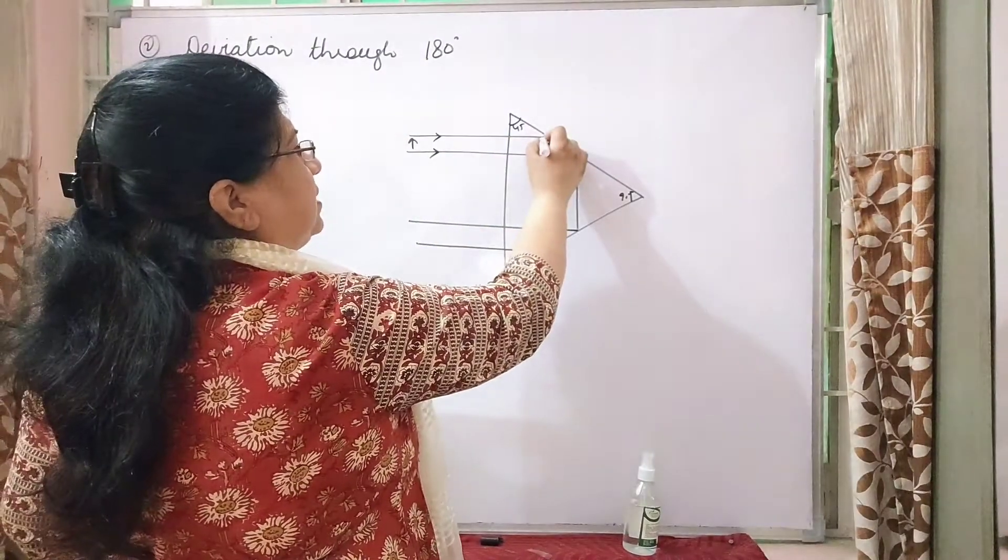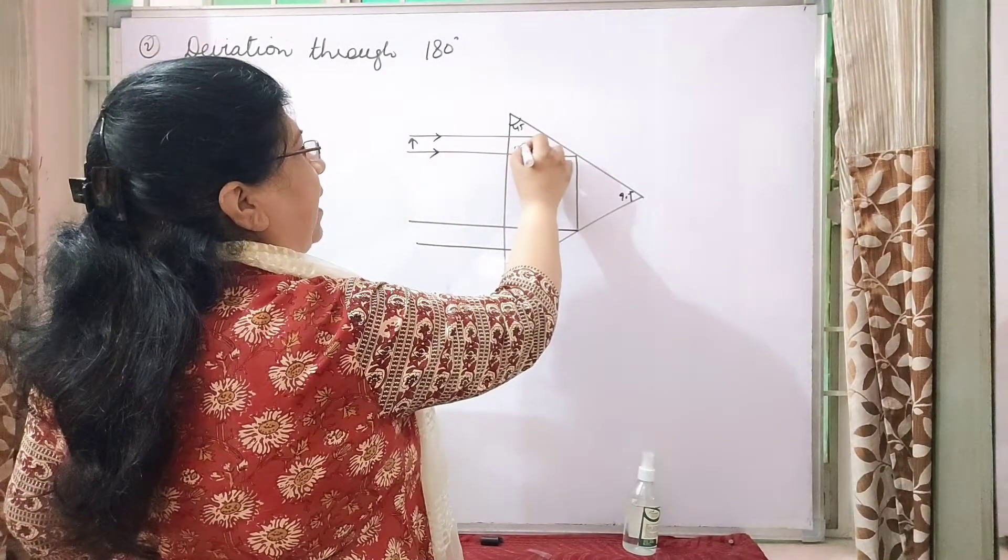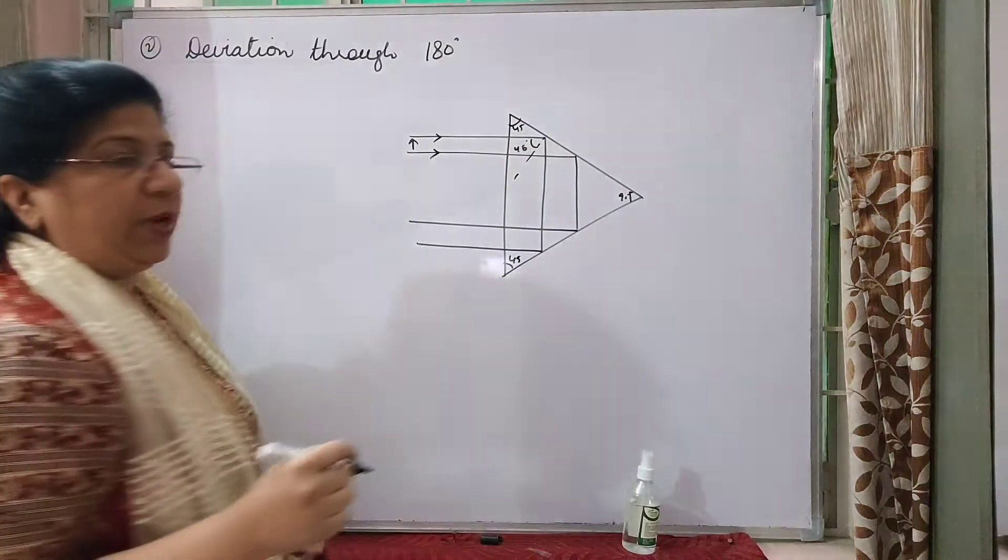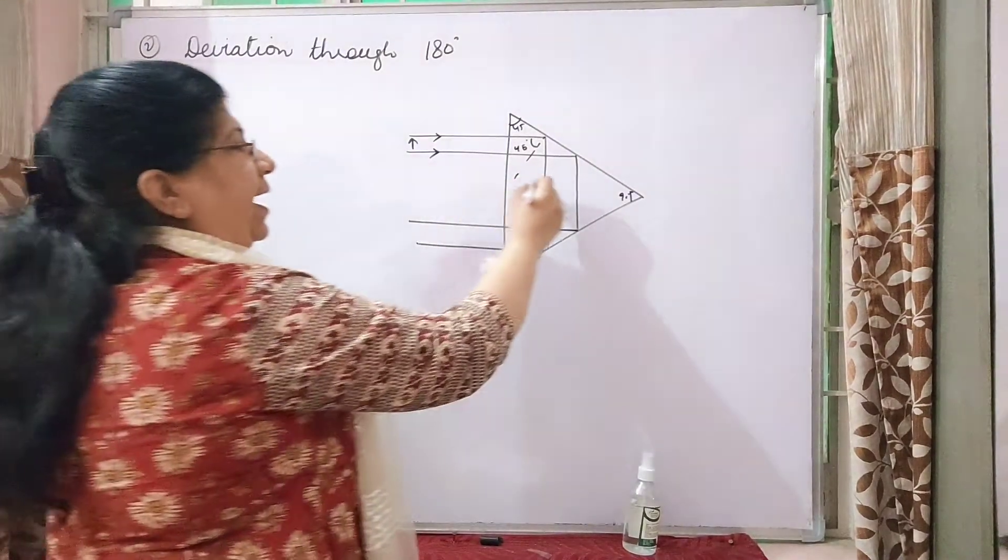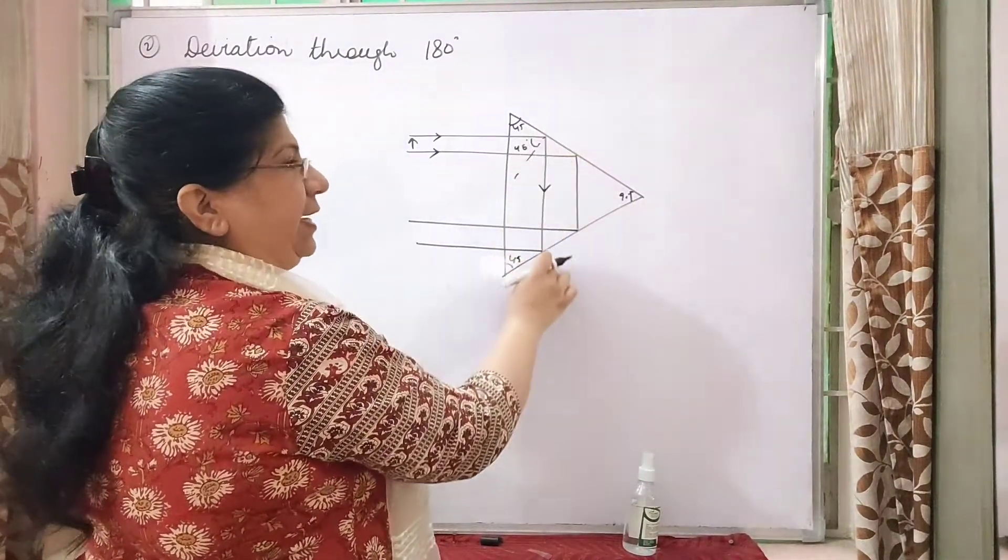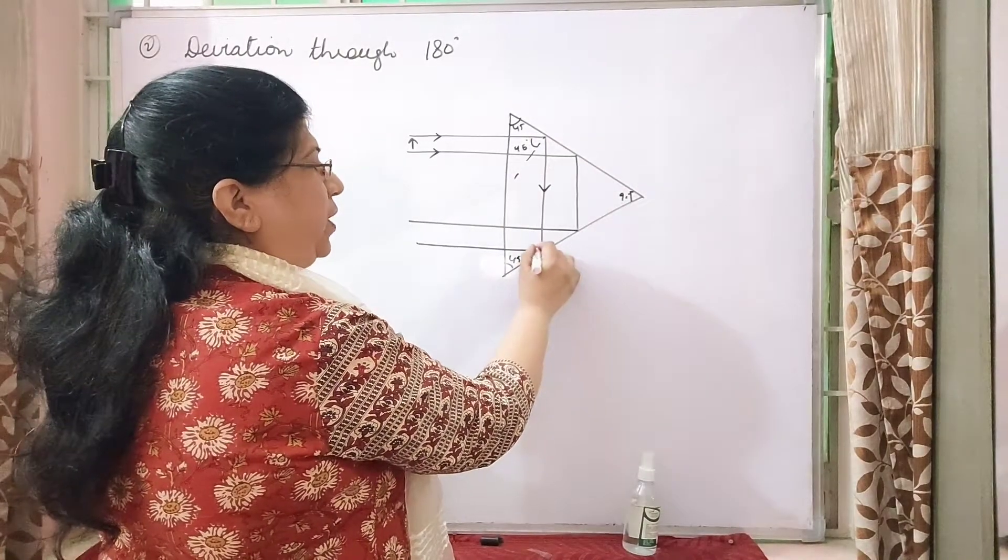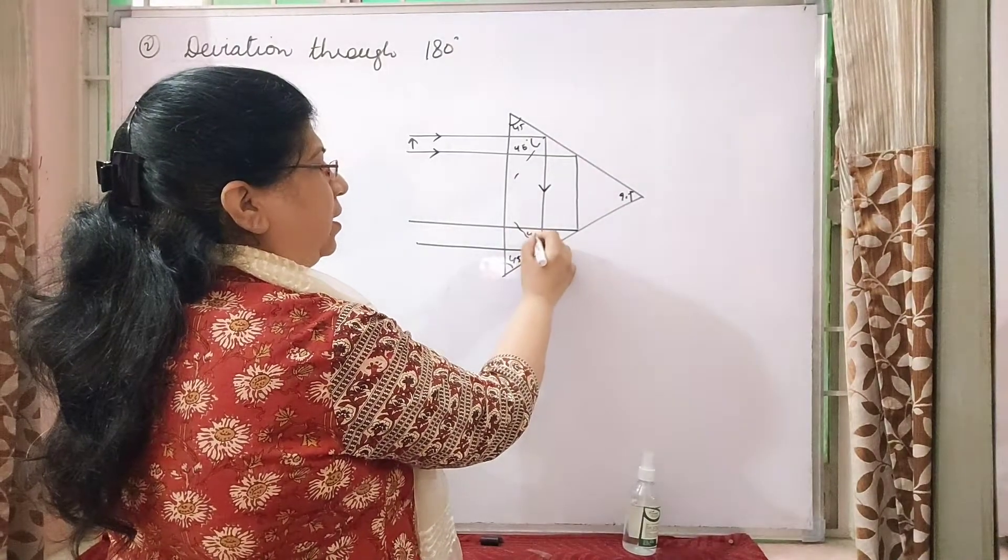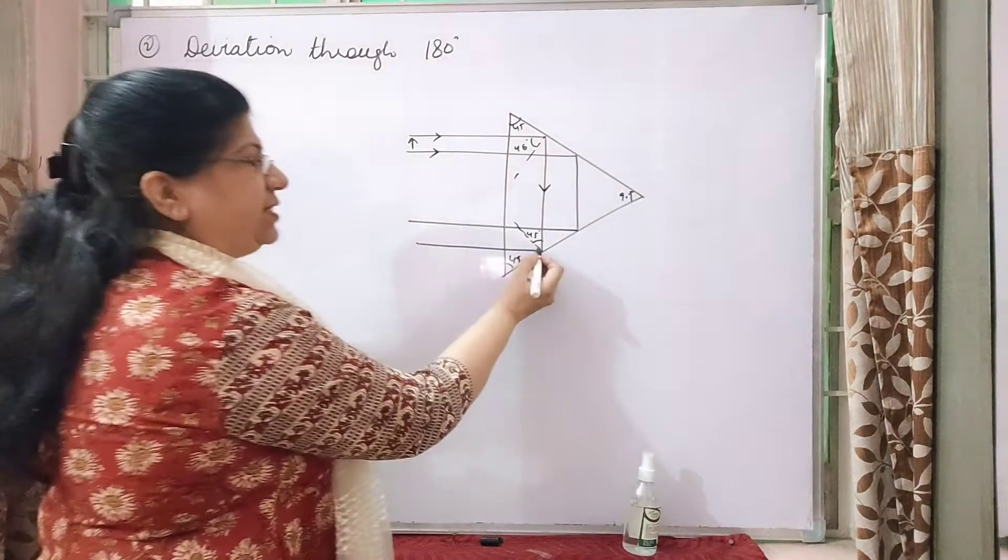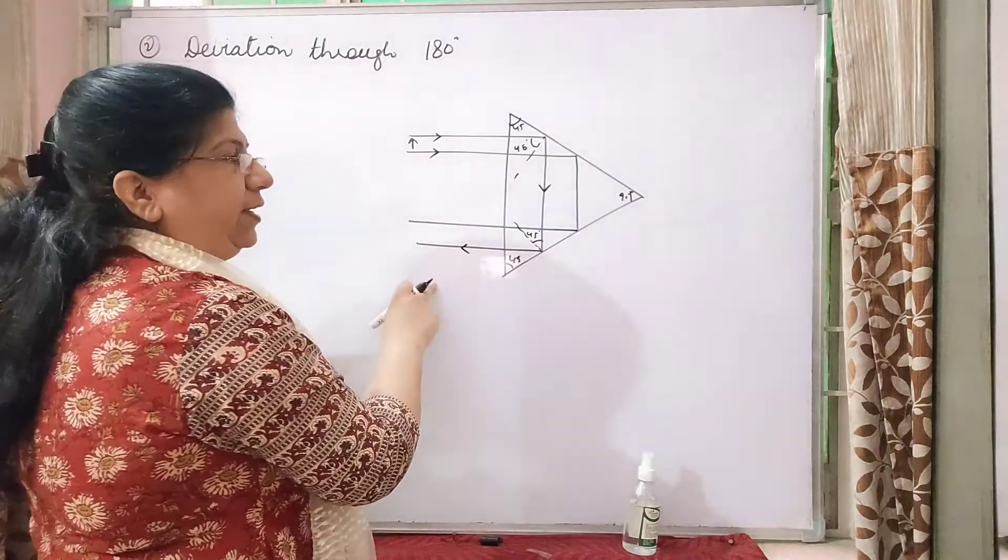The light ray coming here is making an angle of 45 degree which is more than the critical angle. Hence it gets totally internally reflected. Here also it is falling perpendicular and the angle of incidence is 45 degree. And once again it is suffering a total internal reflection.